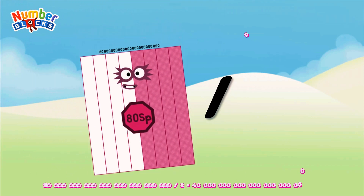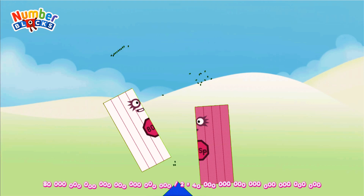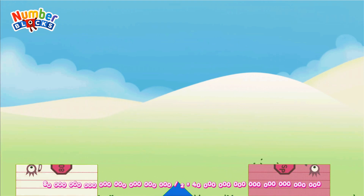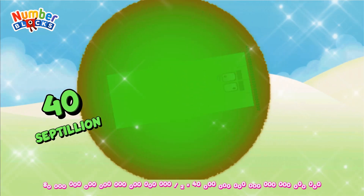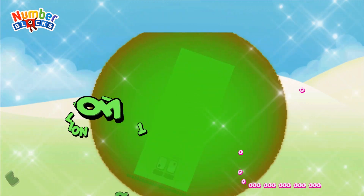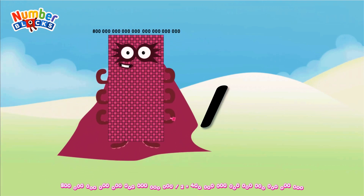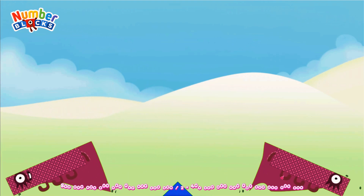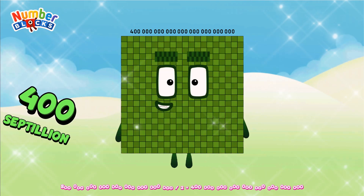Eight septillion divided by two equals forty septillion. Eight hundred septillion divided by two equals four hundred septillion.